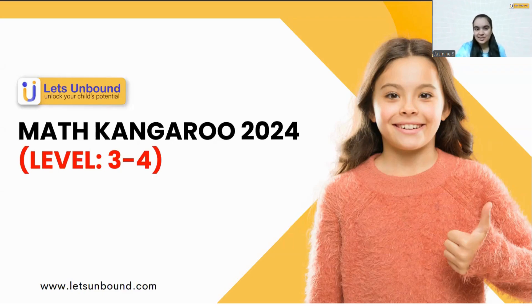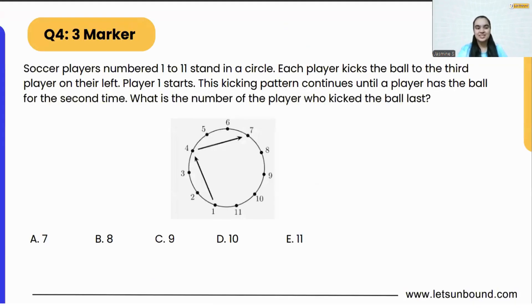Let's get started with our problem. The question is: soccer players numbered 1 to 11 stand in a circle. Now the soccer players are numbered 1 to 11 and you can see over here they are standing in circle: 1, 2, 3, 4, 5, 6, 7, 8, 9, 10, 11, right, so they are standing in a circular path.